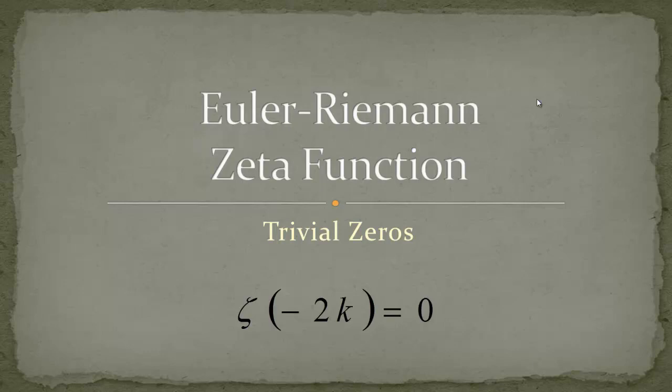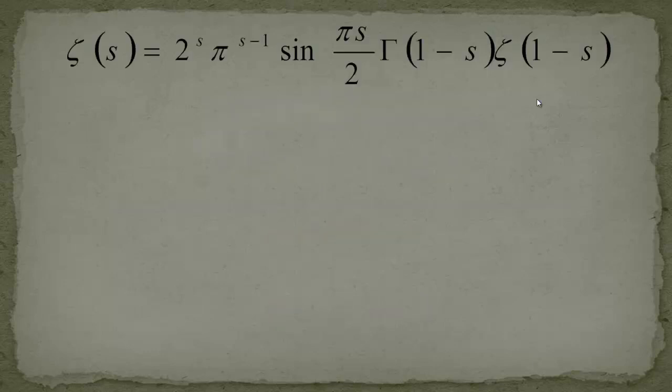Now let's have a look at how we can derive these. It's a pretty simple proof so don't be too scared if this video is over very fast. Let's start off with the Riemann functional equation. The zeta function can be written as ζ(s) = 2^s π^(s-1) sin(πs/2) Γ(1-s) ζ(1-s).